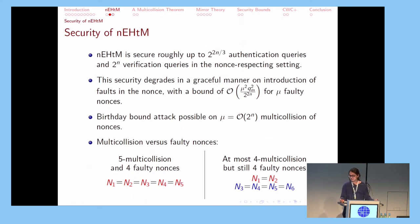As I've already mentioned, nEHTM is secure roughly up to 2^(n/3) authentication queries and 2^n verification queries when the nonce is respected. And its security degrades gracefully when the nonce is misused. In fact, this degradation is linear. So when the number of faulty nonces, which here we're denoting by μ, becomes pretty much equal to the number of authentication queries QM, only then does the security fall down to the birthday bound. But if, let's say, a constant number of faulty nonces are present, then it won't affect the security that much.